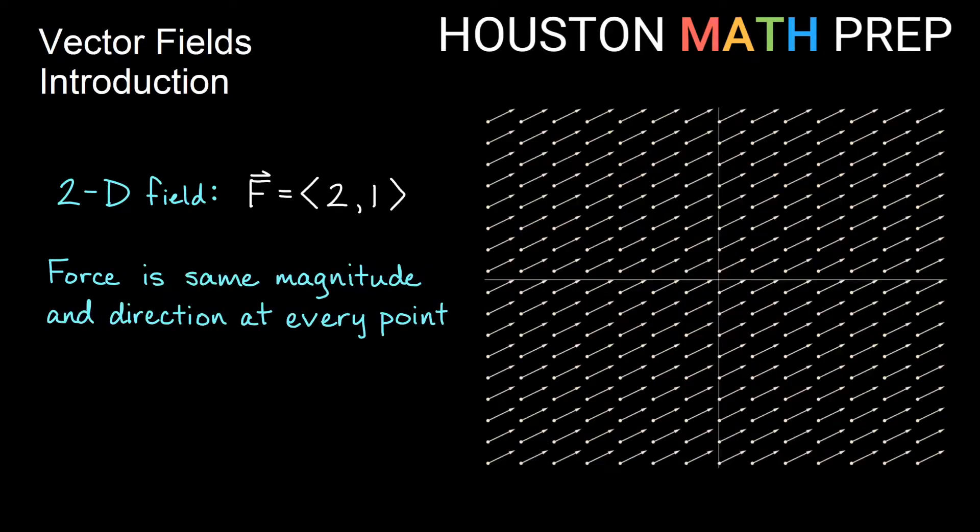If you think about this field where my vector field is <2, 1> in two-dimensional space, you can see it assigns the vector <2, 1> to every single point in two-dimensional space. So here the magnitude and the direction is the same at every point because we have the same vector <2, 1> at every point. This would describe water perhaps where everything is flowing at the same rate and in the same direction at every point.